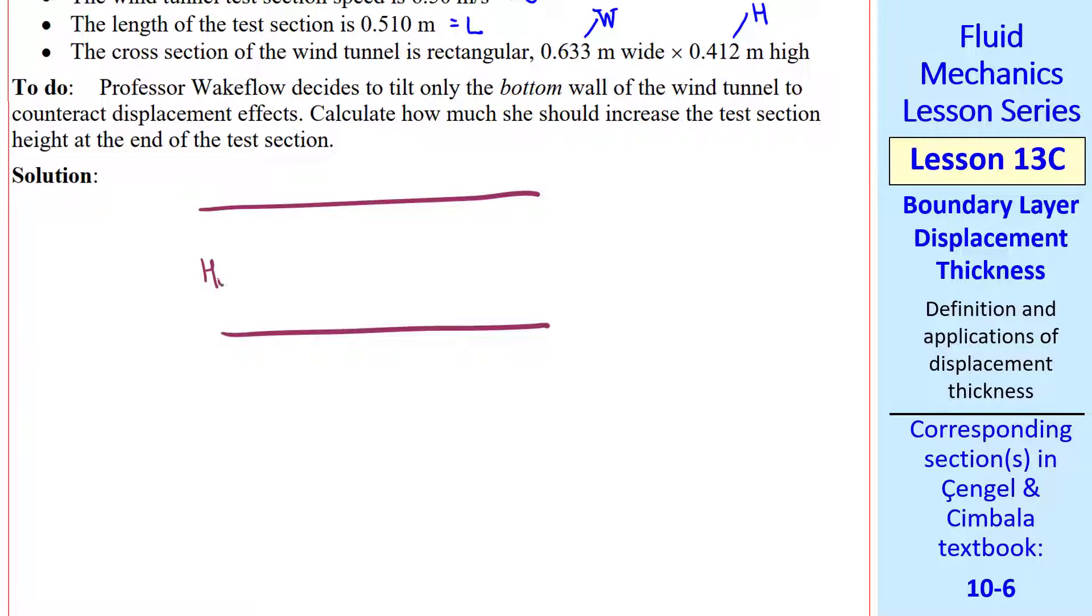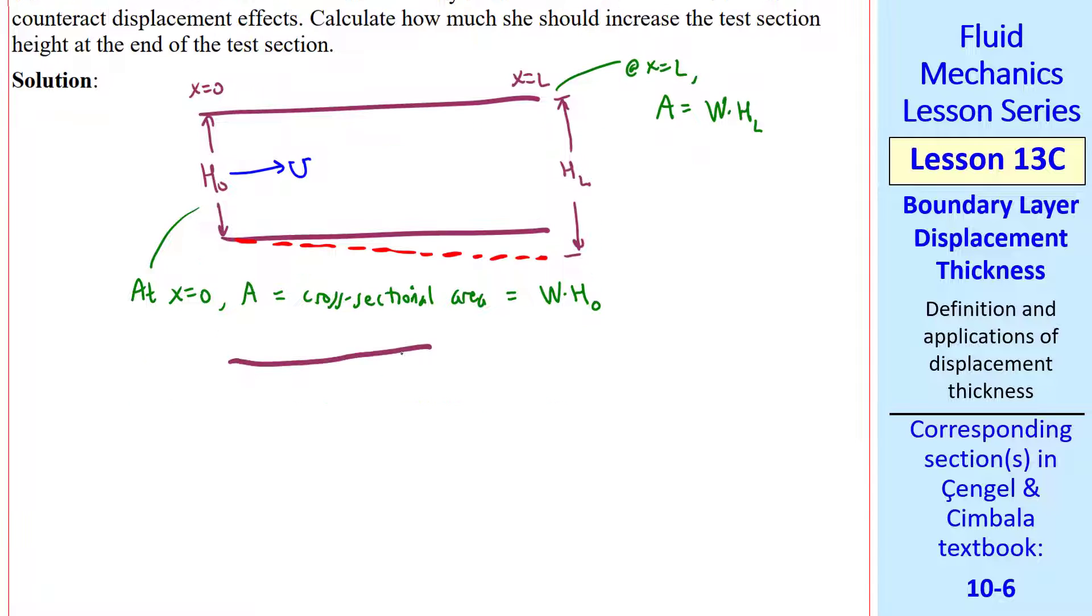Let's call the original height H0. And she tilts the bottom wall. We'll call this height HL, the height of the test section at X equal L. In this case, we keep W constant. At X equal 0, the cross-sectional area is W times H0. At X equal L, A equal W times HL, our modified height. Looking upstream at location X equal L, the end of the test section, there is a boundary layer along each wall that has grown. And the important parameter here is delta star, which we assume is the same all around the perimeter of the test section. The dimensions are H0 and W.